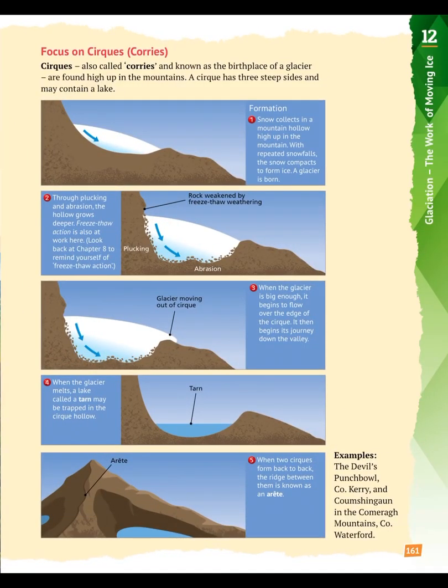Have a look at page 161, which shows photos about the formation of a corrie or cirque. Figure one shows how snow is collecting. Figure two shows plucking, abrasion, and freeze-thaw action deepening the hollow. In figure three, the glacier starts to move out over the lip or low edge of the corrie. Figure four shows the tarn — a little lake left when the glacier has melted away. Figure five shows an arête — a high ridge separating two corries.